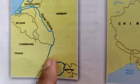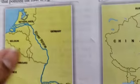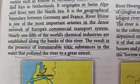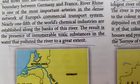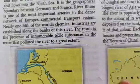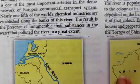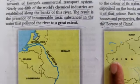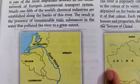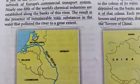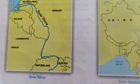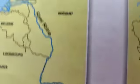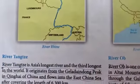It is the geographical boundary between Germany and France — this side is Germany, this is France. River Rhine is one of the most important arteries in the dense network of Europe's commercial transport system. Nearly one-fifth of the world's chemical industries are established along the banks of this river. This is very sad because the result is the presence of innumerable toxic substances in the water that have polluted the river to a great extent.